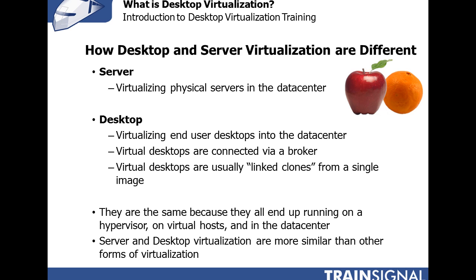Virtual desktops are usually what they call linked clones from a single image. You can create the perfect golden end user desktop — it could have Windows 7, all the patches, every one of your applications, your antivirus solution, and everything that end user will need to do their job. You could give a thousand end users access to that one desktop, but that golden image isn't changed. Only the changes they make over time are stored in a separate file. So each user's file contains just the changes to the golden desktop. When you need to make changes to the golden image, you can just change that one image — you don't have to change a hundred end user virtual machines.